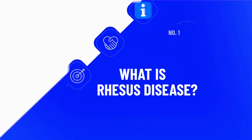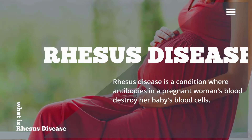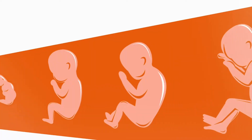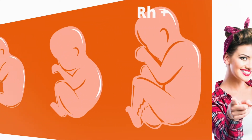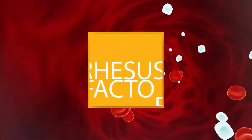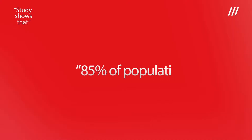What is Rhesus disease? Rhesus disease is a condition that happens during pregnancy. It can negatively affect the unborn baby if the unborn baby is Rhesus positive and the woman carrying the pregnancy is Rhesus negative. There is a protein usually found on red blood cells called the Rhesus factor.